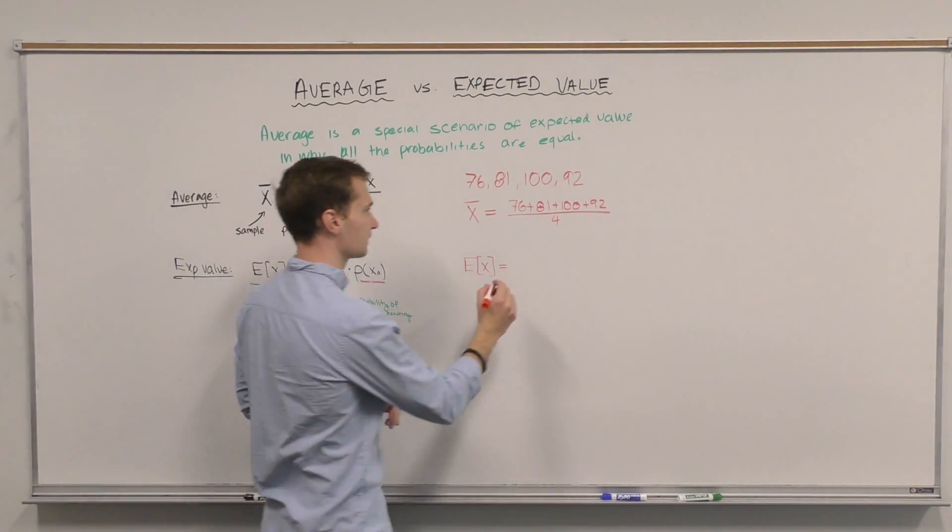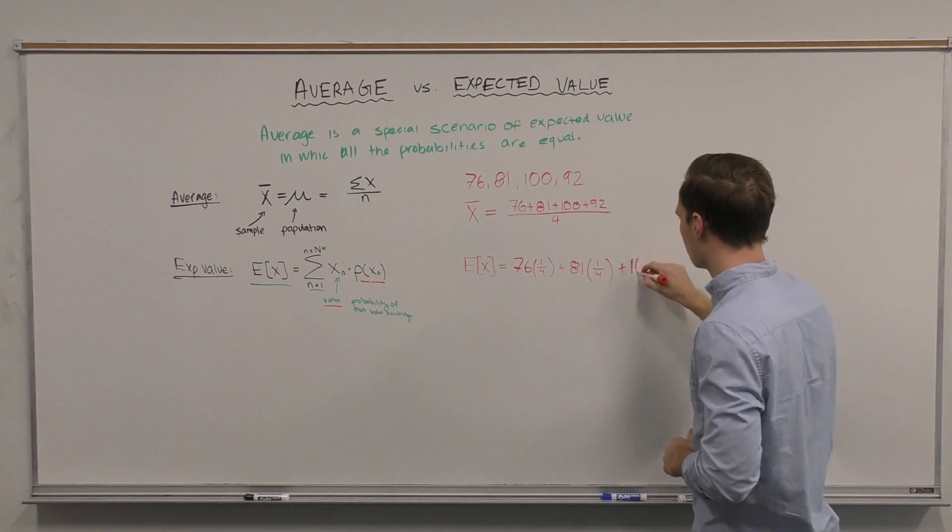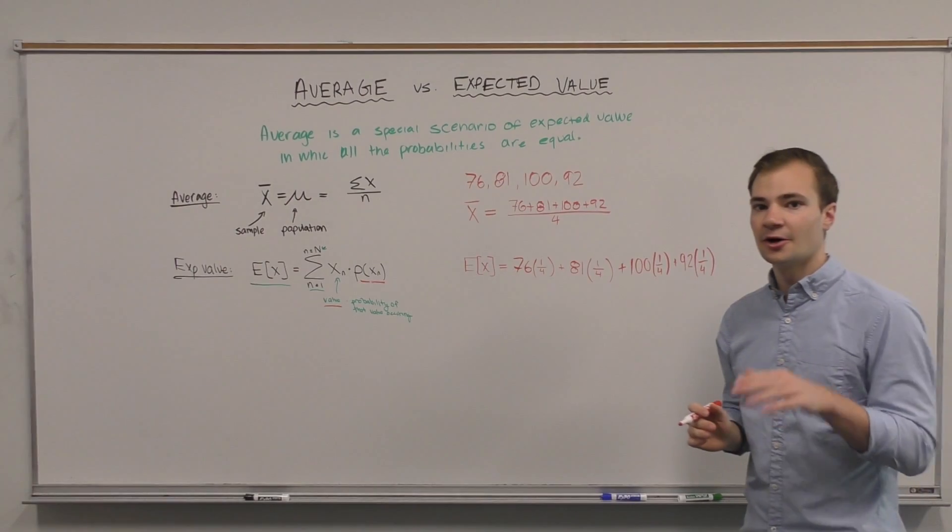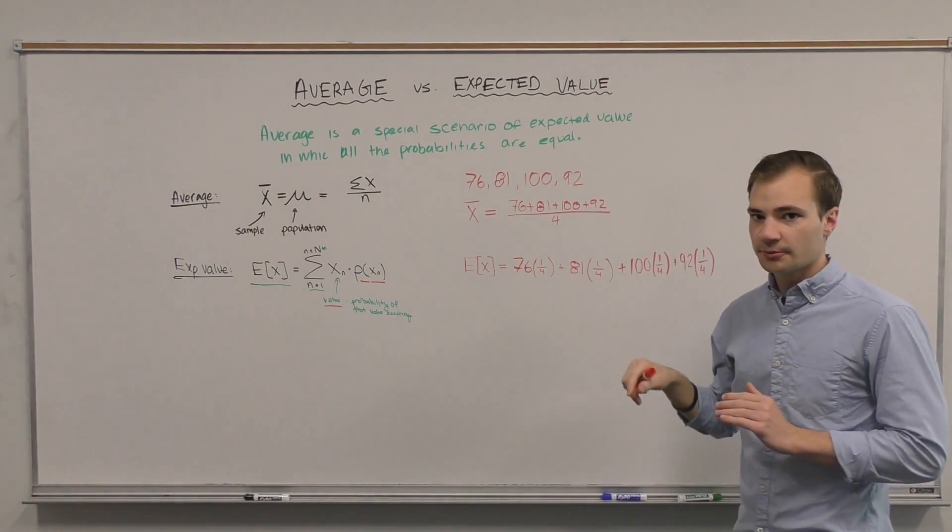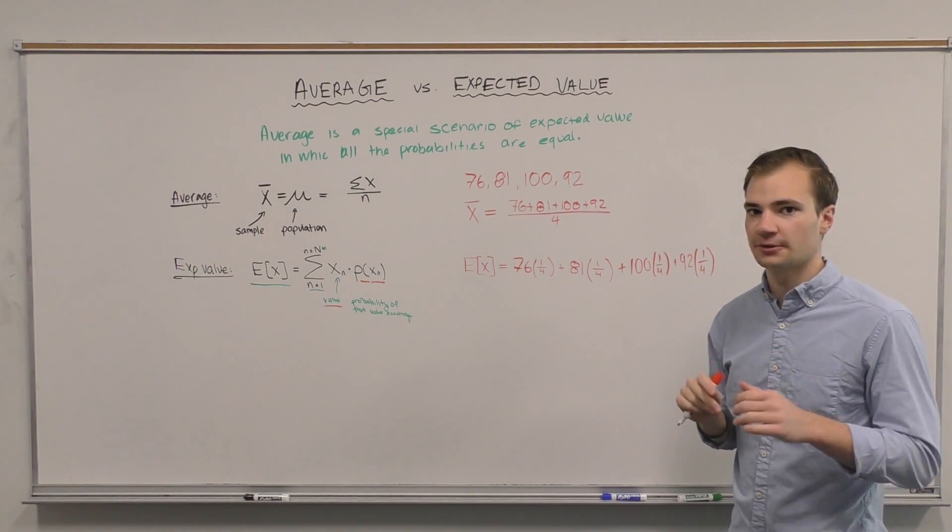So we know that the probability of a given X is one-fourth. Now I hope the gears are turning. Let's take both of these formulas and do a little bit of math, a little bit of factoring, and check out what we get.